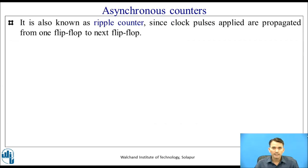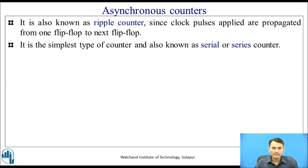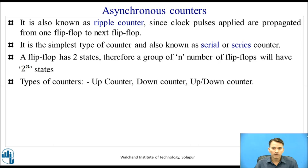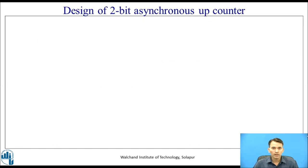Asynchronous counters are also known as ripple counters since clock pulses applied are propagated from one flip-flop to the next. It is the simplest type of counter and also known as a serial or series counter. A flip-flop has two states; therefore, a group of n flip-flops will have 2 raised to n states. Subtypes of counters include: an up counter, which counts in ascending order; a down counter, which counts in descending order; and an up-down counter, which has both facilities of up-counting and down-counting.